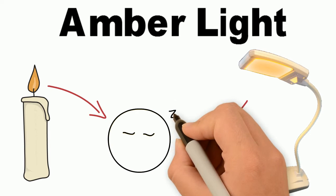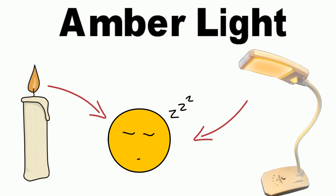Numerous studies have demonstrated that simply switching to amber light in the evening allows for natural melatonin production and healthy sleep patterns.